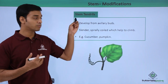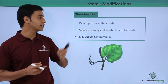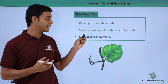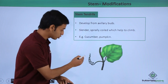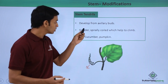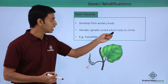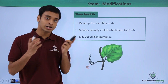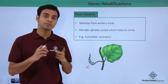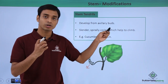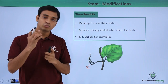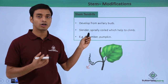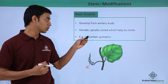The next modification is known as stem tendrils. These develop from the axillary buds, which become slender and spirally coiled. These spiral structures can stick to other plants or trees, providing support and allowing the plant to climb and move towards light. Examples are cucumber and pumpkin.